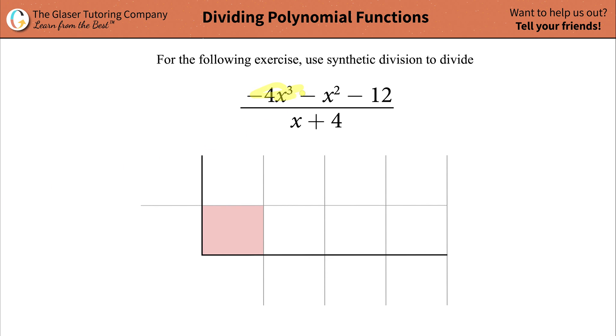So we have -4x³ - x² - 12, all being divided by x + 4. The first step is to take a look at your numerator, which is known as the dividend.